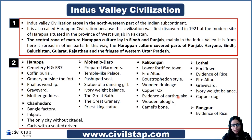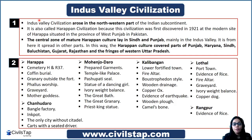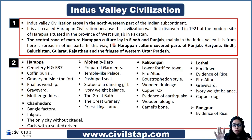Now we will discuss Indus Valley Civilization. This civilization arose in the north-western part of the Indian subcontinent. It is also known as Harappan Civilization because the first discovery of this civilization was made in 1921 at Harappa, which is situated in the province of West Punjab in Pakistan. When the Harappan culture matured, its central zone became Sindh and Punjab — these are the main areas of Harappan civilization, from which it slowly spread outward.